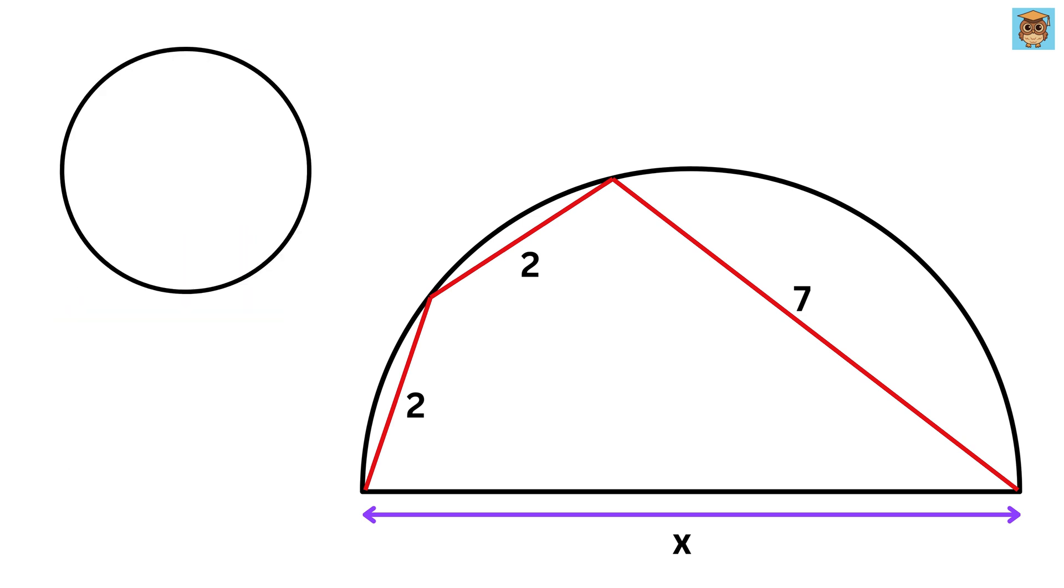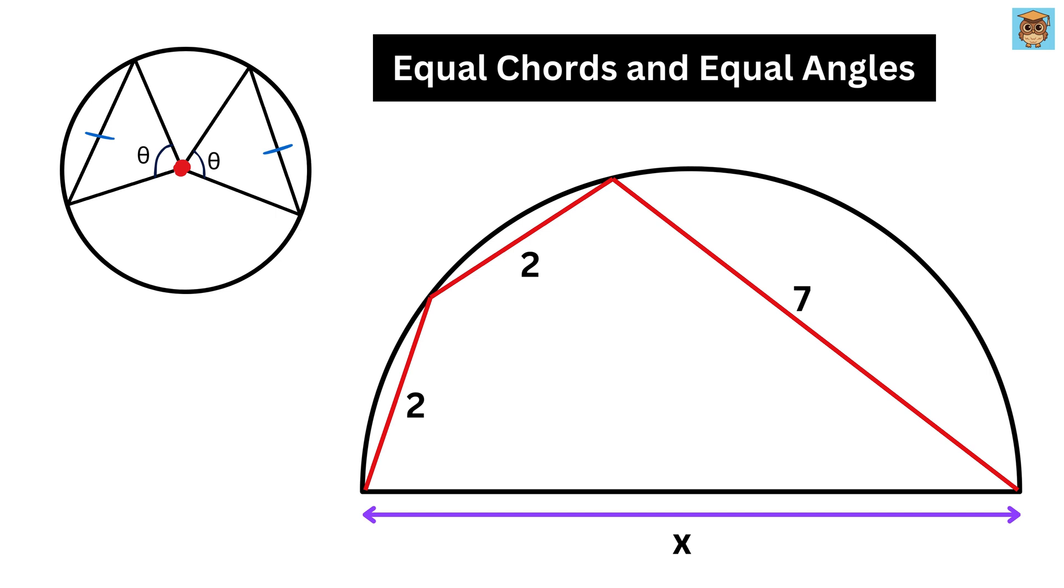Consider a circle with this as its center. Now look at this part very carefully. Draw two chords like this of same length, and then connect this chord with this center such that this angle is Theta. Now, if I connect this chord with the center, then this angle will also be equal to Theta. This is also called equal chords and equal angles theorem.